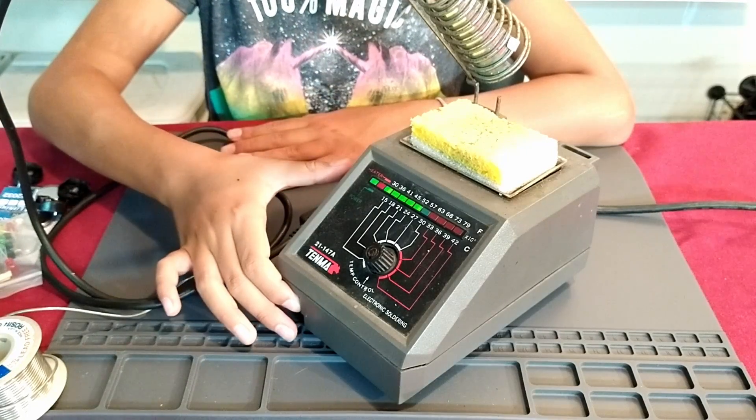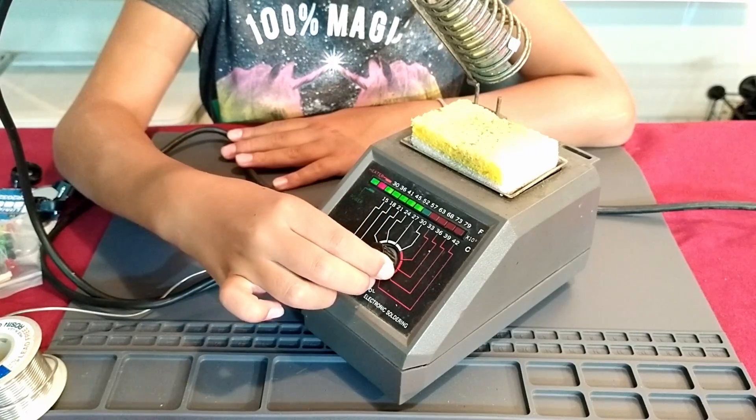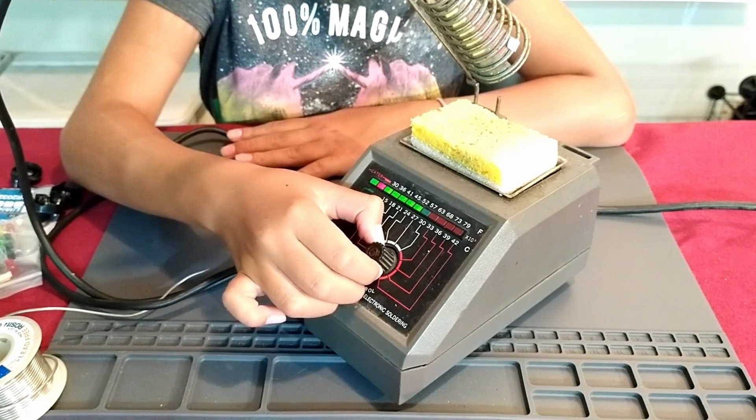First you turn on the soldering iron, then set the soldering iron to approximately 700 degrees Fahrenheit.